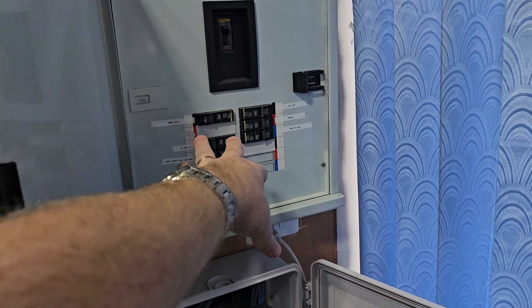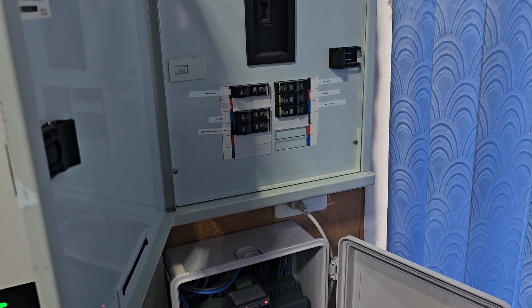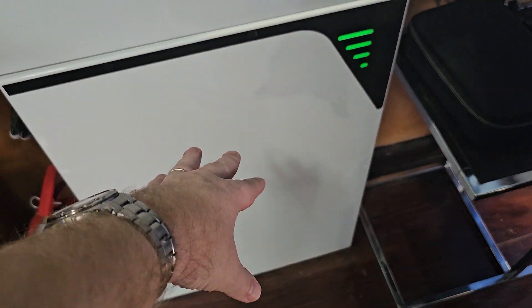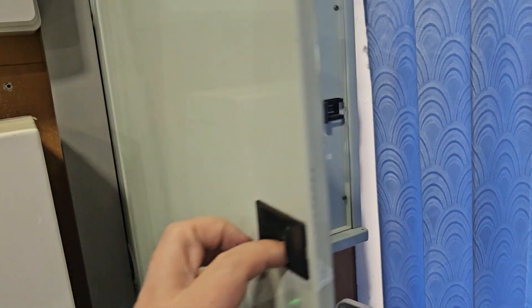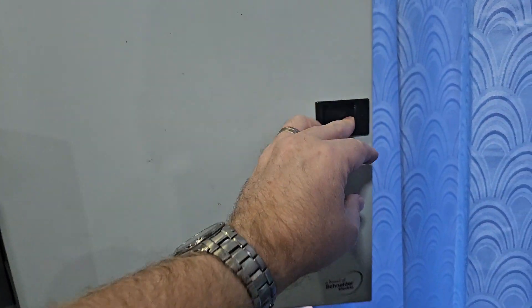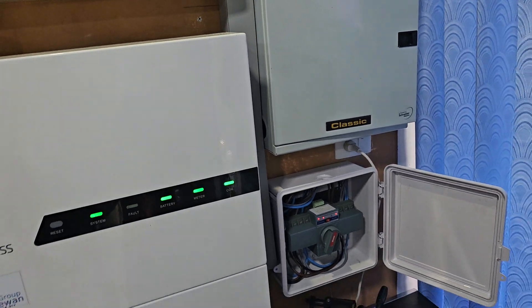So these breakers control things that when you have a power cut, the power from the battery will go to only these breakers. That's what we call the UPS and that's some air conditioning and some sockets.